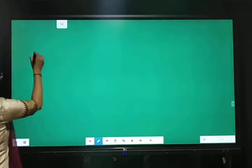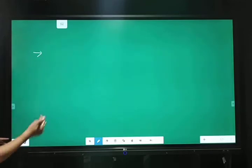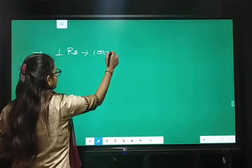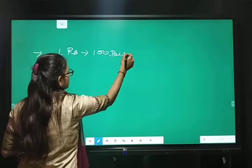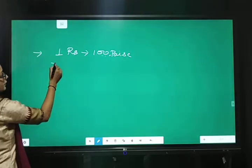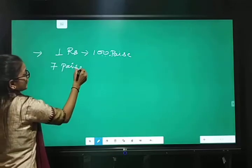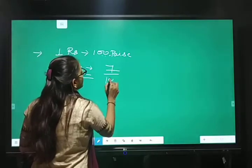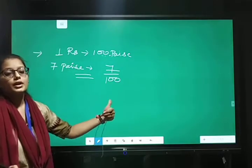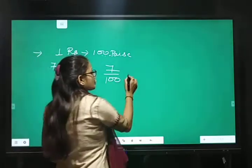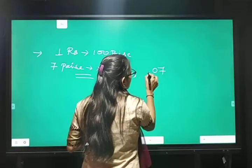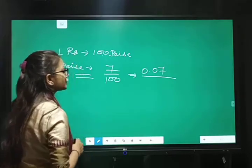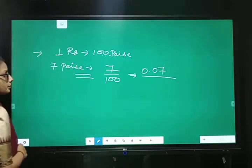Next is change into paise. So, 1 rupees is equal to 100 paise. So, we can change 7 paise. 7 paise ko agar aapko rupees me change karna hai to 7 upon 100. Agar denominator mein 2, 0 hai to 2 digit ke baad lag jayega. So, 7, 0 and 0. So, answer is 0.07, 0.07 rupes. Okay?